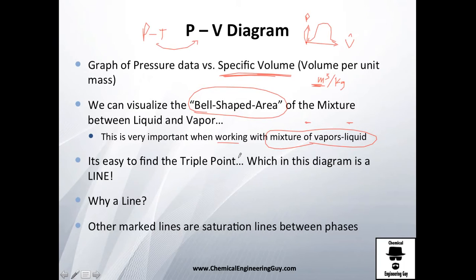It's also easy to find the triple point, not as easy with the PT diagram but this is still easy to find. The interesting part here is that the triple point right now will be a line. So essentially in a PT diagram you have a point, but in PV you have a line.